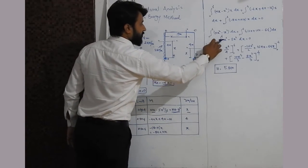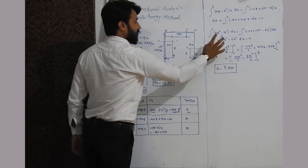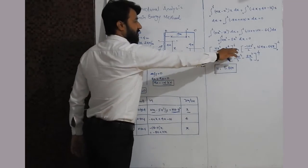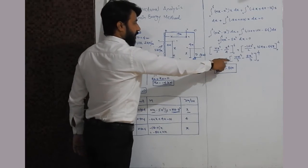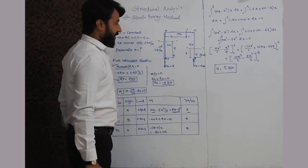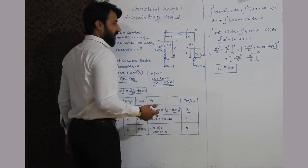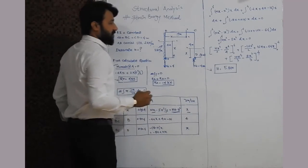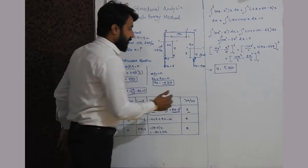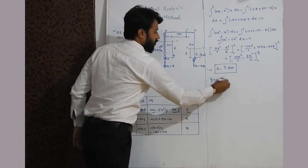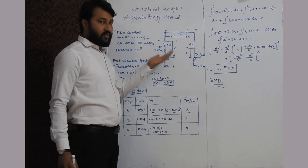Integrating term by term — increasing each power of x by 1 and dividing by the new power — gives: [Hx³/3 − x⁴/4]₀⁴ + [−16x²/2 + 16Hx − 64x]₀⁴ + [Hx³/3 − 8x³/3]₀⁴ = 0. Substituting the limit x = 4 and solving yields H = 5.8 kilonewtons. The bending moment diagram can then be drawn using the same approach as in the previous numerical.